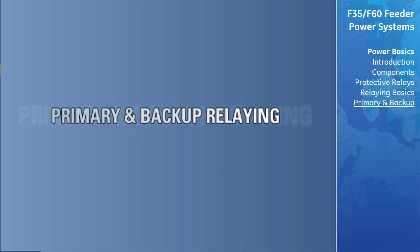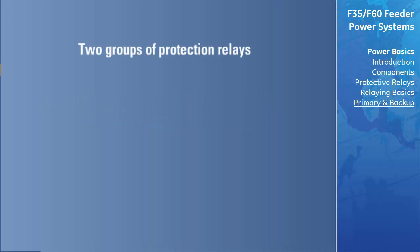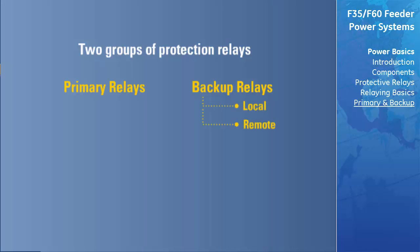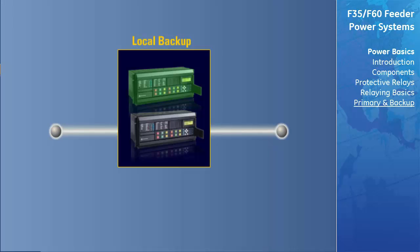In general, the most common faults that occur on a power system are short circuits. Relays dedicated to protection against short circuits fall into two groups. The first group are called primary relays and are the first line of defense, while the second are called backup relays and function only when primary relaying fails. Backup relaying can be classified as either local or remote. Faster reacting backup relaying can be achieved by using local backup relaying systems, meaning the relay providing backup is located on the same component being protected by the primary relay.